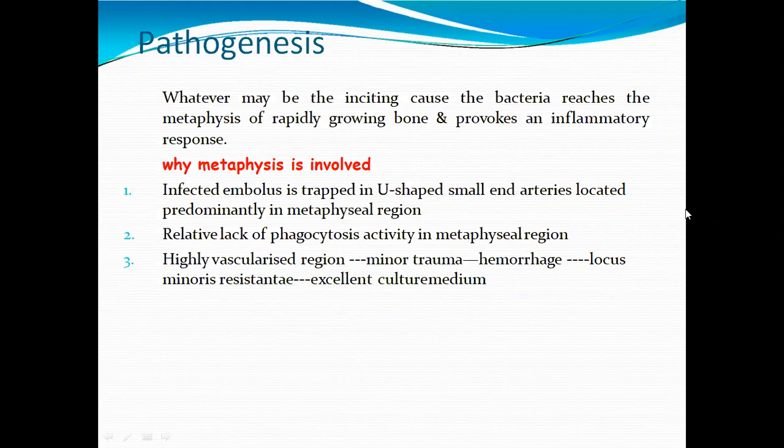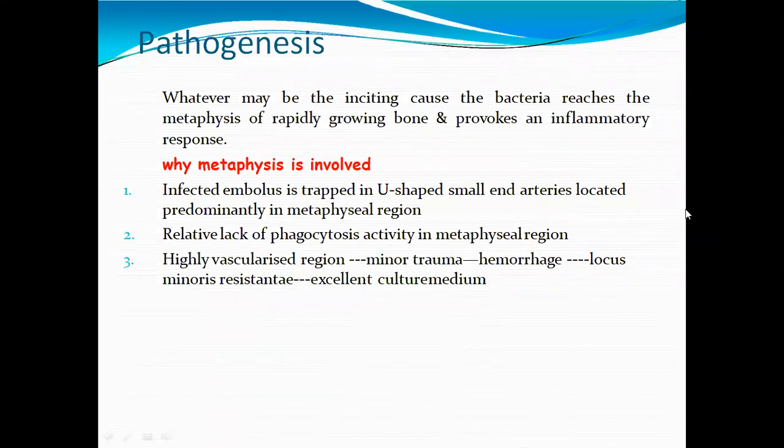For vascular reasons, minor trauma and hemorrhage conditions create a locus of minor resistance and excellence — this is the connective form of how it causes pathogenesis of osteomyelitis.